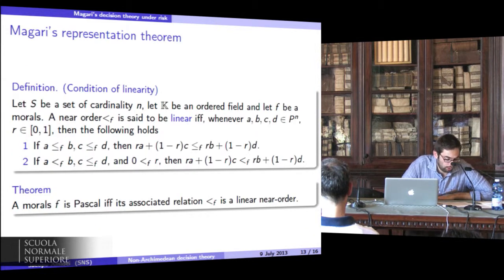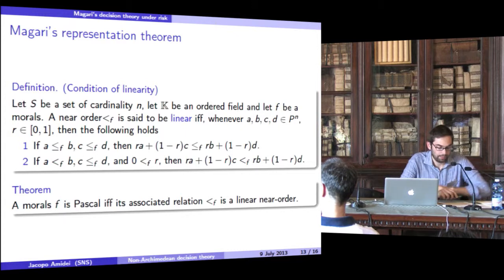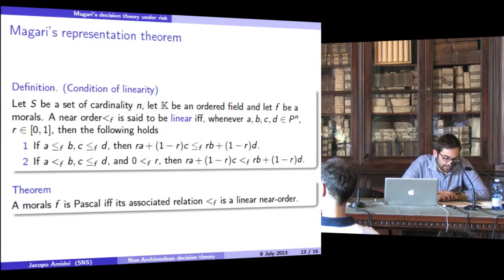Given the condition of linearity, Roberto Magari proved the following representation theorem: A moral F is Pascal if and only if its associated relation is a linear near order.